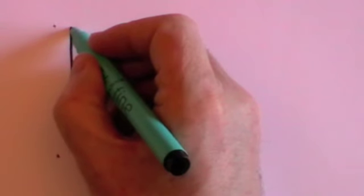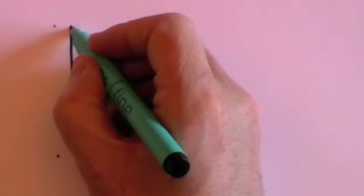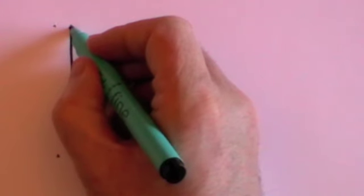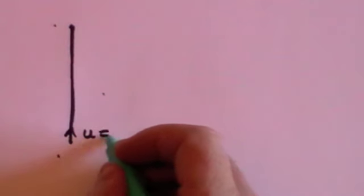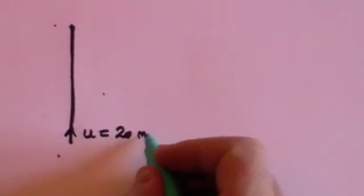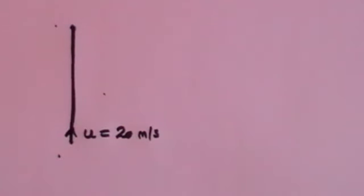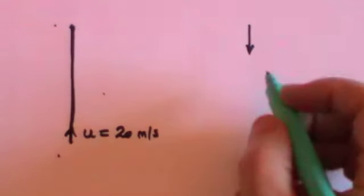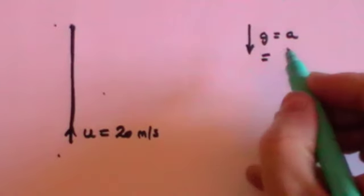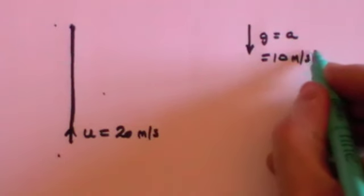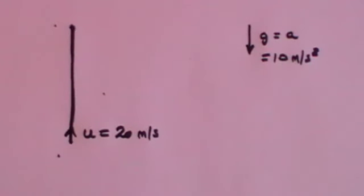Let's do some examples for which we will need the SUVAT equations derived in the very first video. We'll start by thinking about the projectile that goes vertically upwards. You throw it exactly vertically upwards — it will be going up against the gravitational pull, which is pulling down, so it will be slowing all the time. Let's suppose the initial velocity u is 20 metres per second upwards. Gravity — which is also the acceleration — we'll regard as 10 metres per second squared. It's usually 9.81, but 10 is easier to work with, and the exam will tell you which one to use.